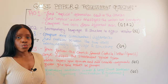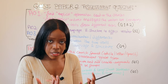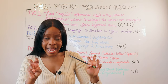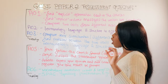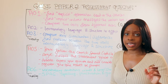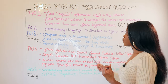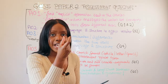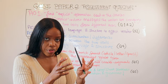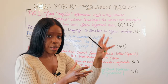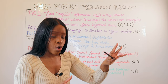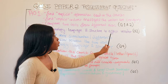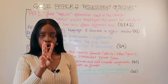AO2 is about understanding relevant subject terminology and is tested in question 3, the language question. It tests whether you can distinguish between language techniques — alliteration, similes, metaphors and so on — versus structural techniques like beginning, middle and end, sentence types, flashback and flash forward. You must not mention structure for the language question. AO2 also requires you to identify the correct terminology and comment on its effect on the reader.